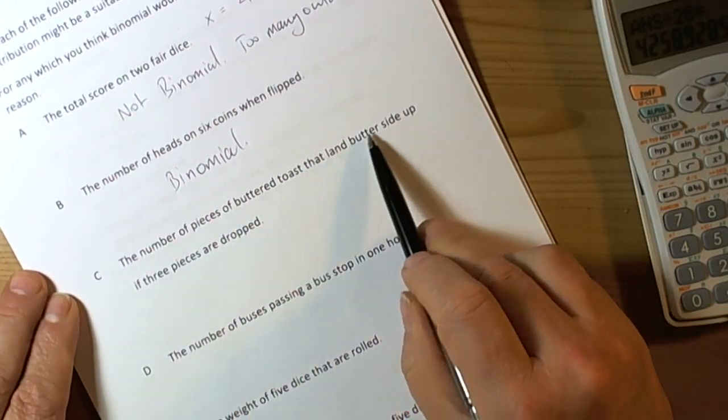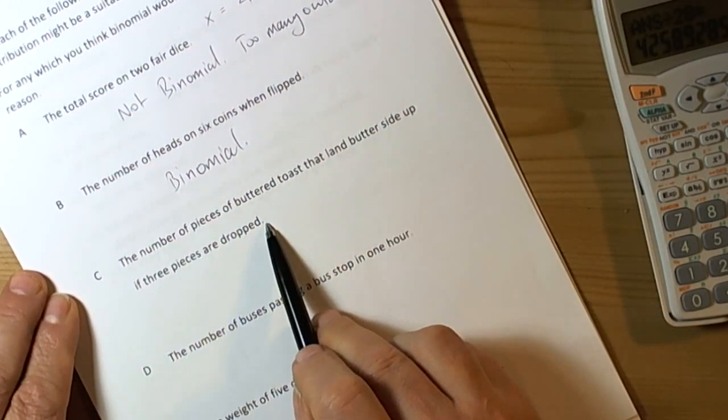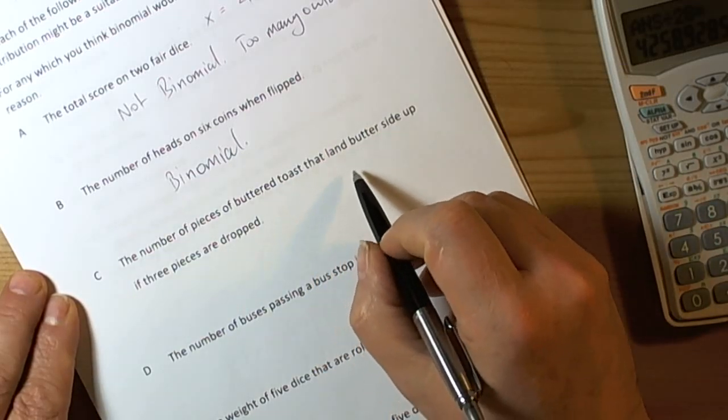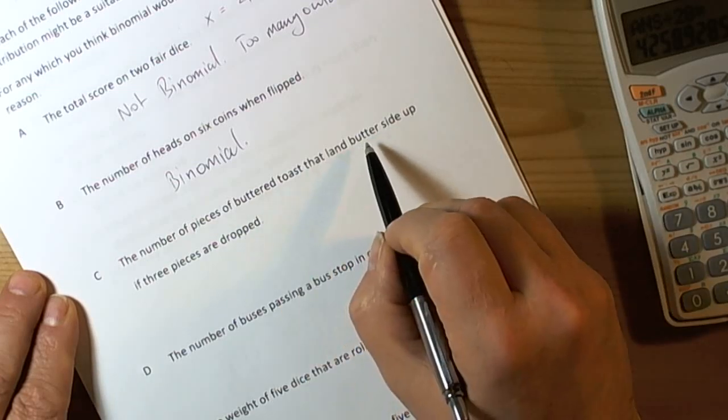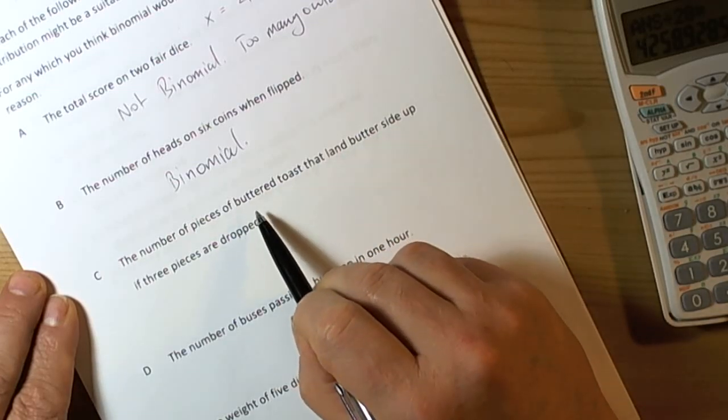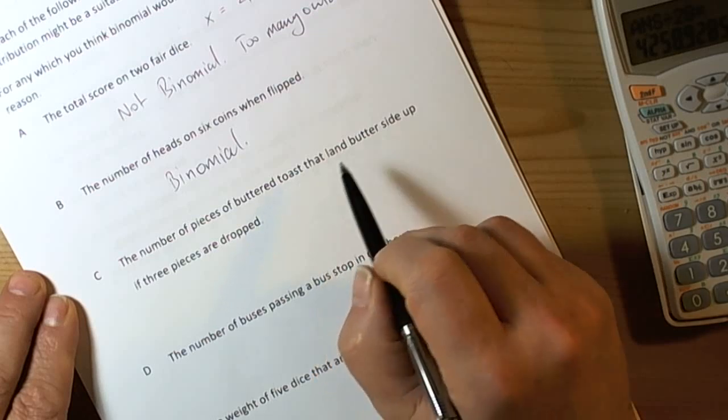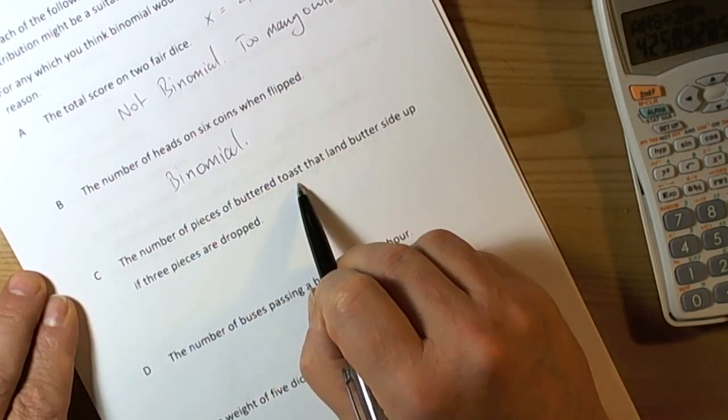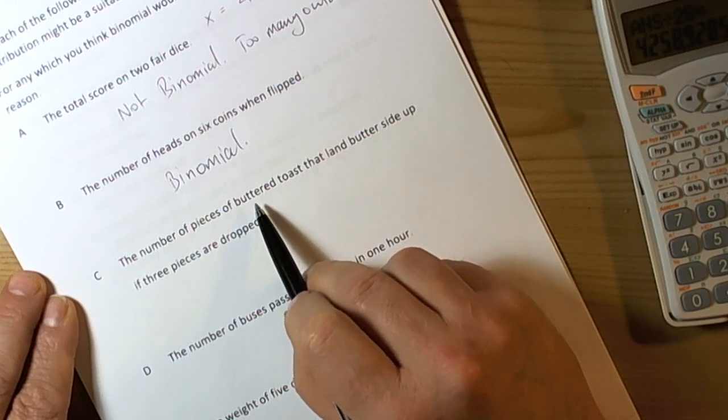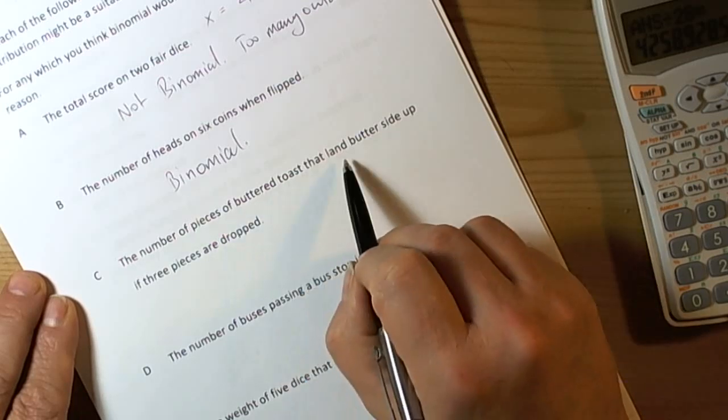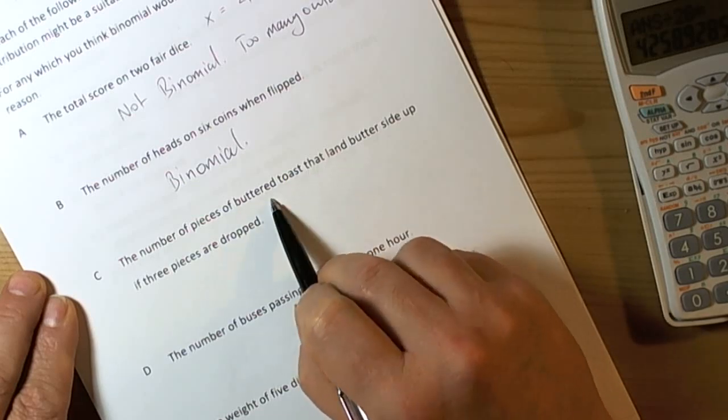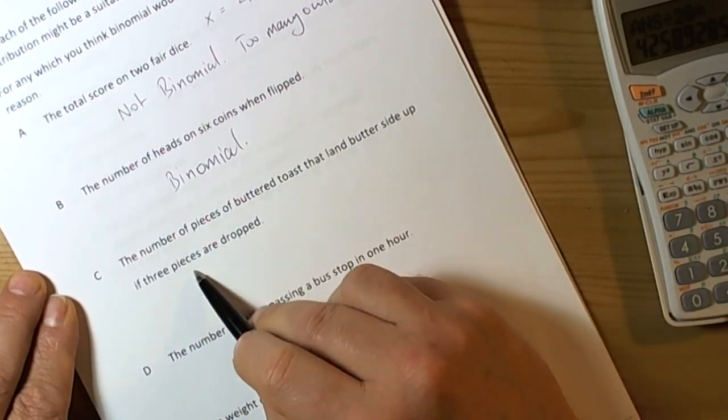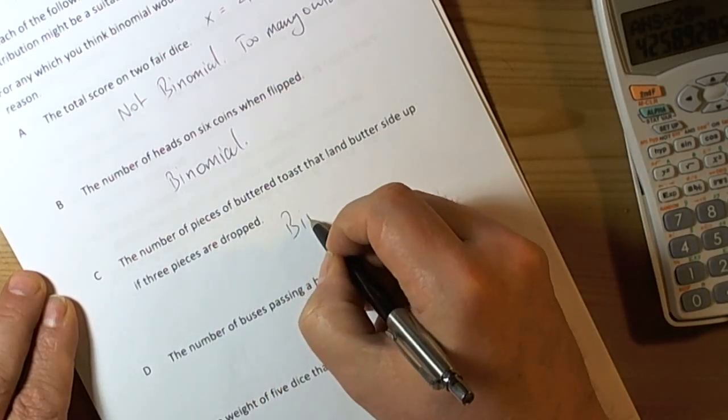The number of pieces of toast that land butter side up if three pieces are dropped. Again we ask the same questions: is there two probabilities, success and fail? Yep, they either land butter side up or butter side down. Are the probabilities fixed? Yep, and we have to assume they're fixed because we're assuming we toss one piece of toast at a time, so it won't affect the probability of the next one. Three pieces, so it's a fixed number of trials. So yep, binomial.